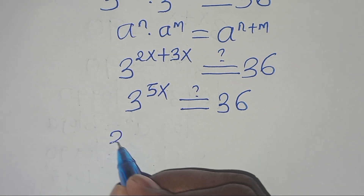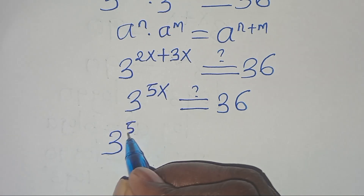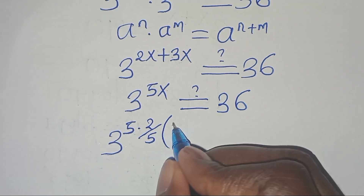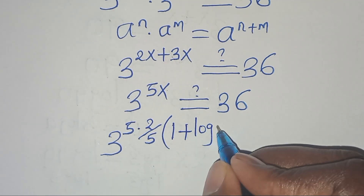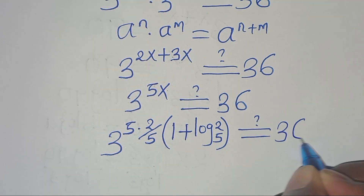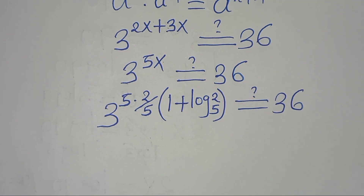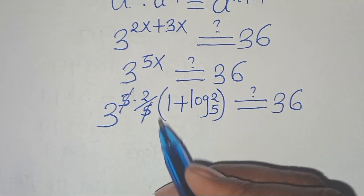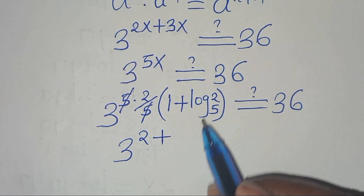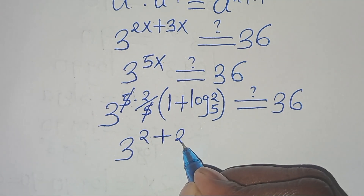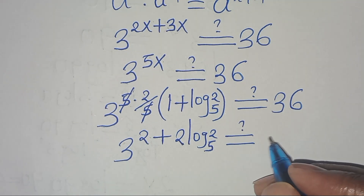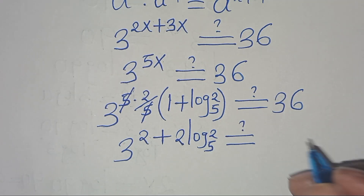Let's substitute the value of x: 3 to the power of 5 times (2/5)(1 + log₃(2)), which should equal 36. Simplifying 5 and 5, we have 3 to the power of 2·(1 + log₃(2)), which expands to 3 to the power of 2 plus 2·log₃(2), and this should give us 36.